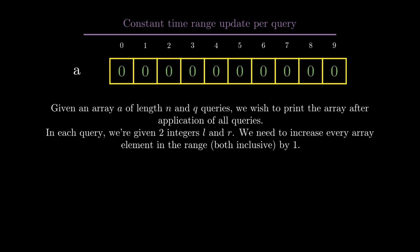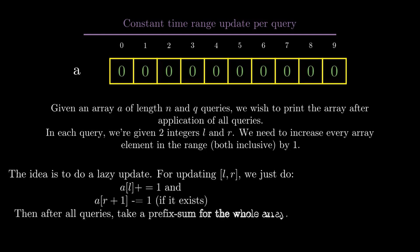The naive way is actually incrementing the values for each query, but if we need to do better, we need to think of something else. The idea is to do a somewhat lazy update. For updating the range [l, r], we just increment a[l] by one and decrement a[r+1] by one if it exists.